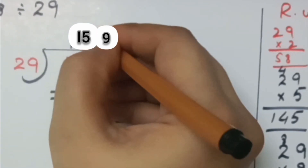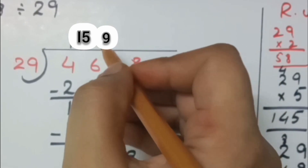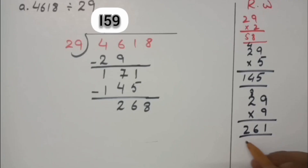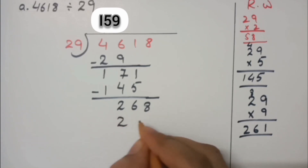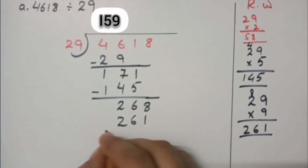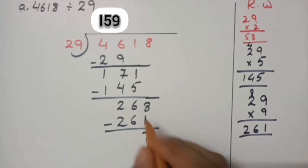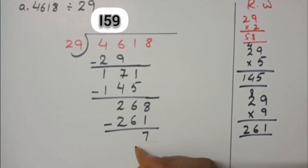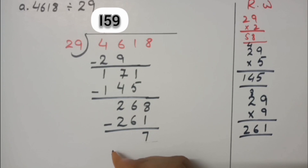We write the answer after multiplication here — 29 nines are 261 — I'm going to write 261 here. Now I do the subtraction: 8 minus 1 is 7, 6 minus 6 is 0, 2 minus 2 is 0. Left-hand side zeros are not mentioned because they have no value.